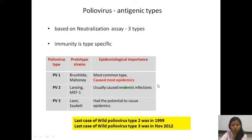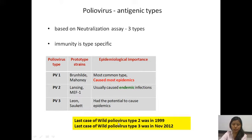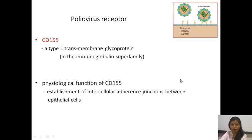Different antigenic types — poliovirus 1, 2, 3 — are identified based on neutralization assay. Immunity in poliovirus is type-specific: a person infected with type 1 becomes immune to type 1 but not to the other two, which is why immunity against all three is important and vaccination always involves all three together. Among the three types, type 1 is most commonly associated with epidemics and type 2 with endemic disease. The last case of wild poliovirus type 2 was identified in 1999, and the last case of poliovirus type 3 was in November 2012.